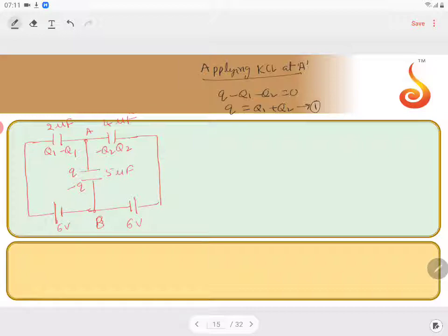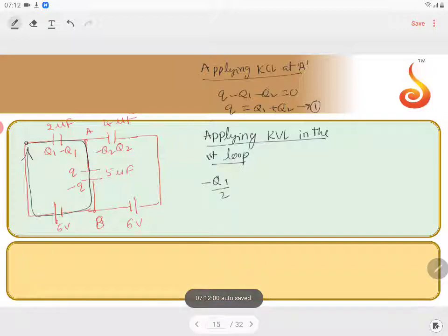Applying KVL in the first loop. Start at point A. So now, minus Q1 by 2, just to substitute 2, ultimately Q1 and Q2 will get in microfarad.